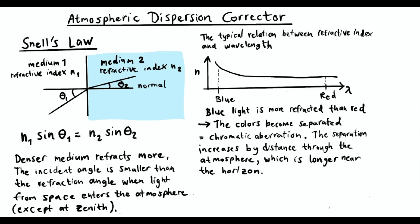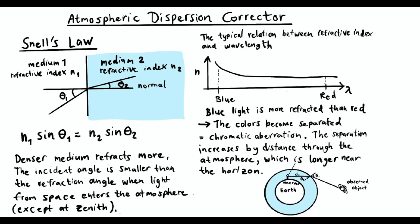The amount of chromatic aberration or dispersion varies depending on the position in the sky. When the light from an object in space reaches the Earth's atmosphere, it's refracted in a way that the angle of refraction is smaller than the angle of incidence, since the atmosphere is more dense than space. That means that celestial objects appear to be higher up in the sky than they actually are, with the exception of the zenith position.